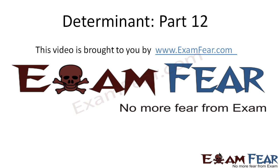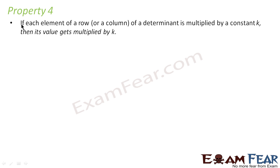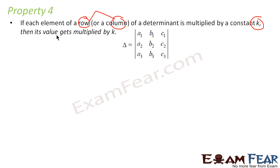Hello friends, this video on determinant part 12 is brought to you by examfear.com. Please make sure that you have watched part 1 to part 11. Property 4 says that if each and every element of a row or a column is multiplied by a constant k, then the determinant value is also multiplied by k. For example, if we multiply all elements in a row by k, we get a new determinant.